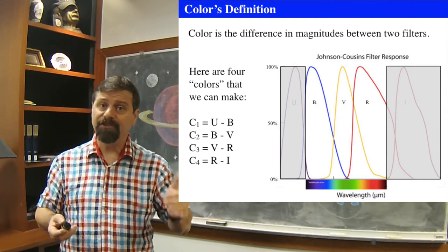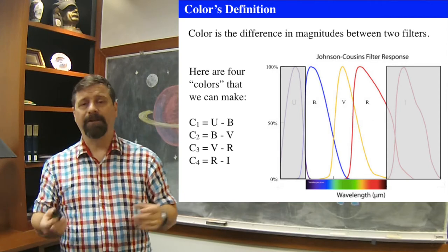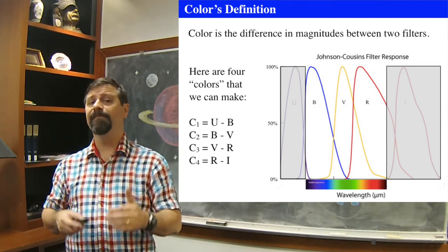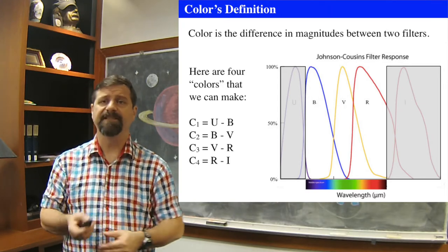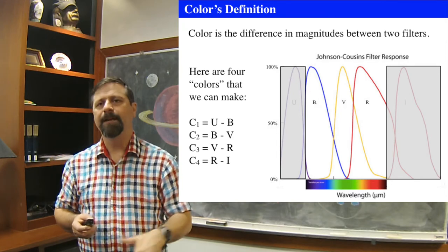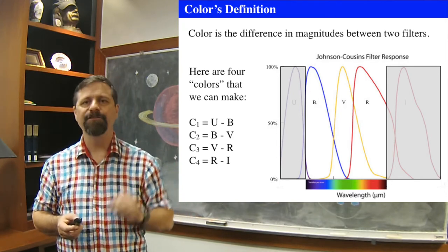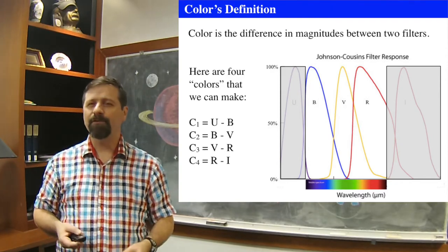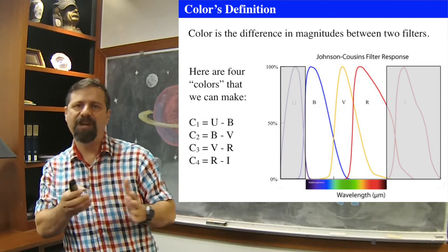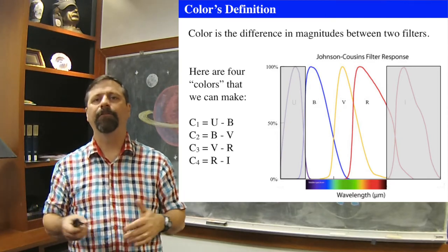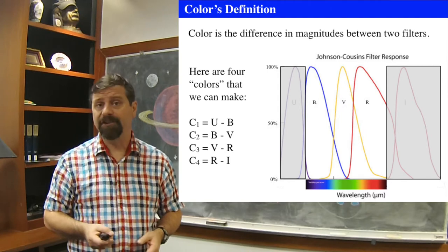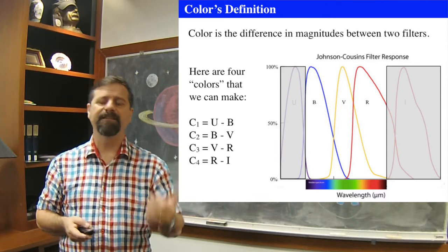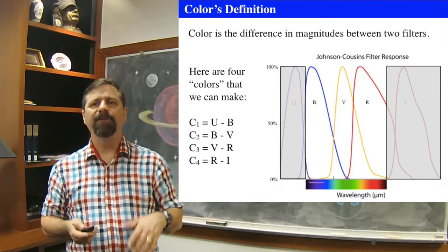We use the magnitude system because we can easily do differential brightnesses between filters. The magnitudes become our reference point in astronomy, not necessarily flux. Color in astronomy is defined as the difference in brightness between two adjacent filters — always taking the short wavelength filter minus the long wavelength filter. Typically you look at adjacent filters: U minus B, B minus V, V minus R, and R minus I — and call those the colors.